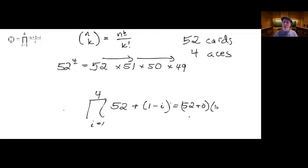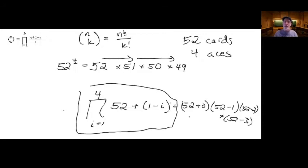And then for our next term, we're going to multiply that by 52 plus one minus i is going to be one minus two, which is negative one, so 52 minus one. And then the next term is going to be 52 minus two and then times 52 minus three. So we're incrementing the amount that we're removing from the 52.